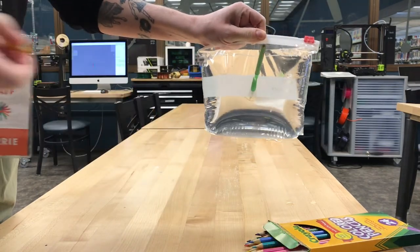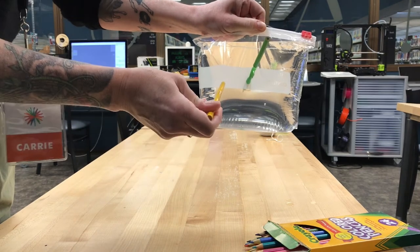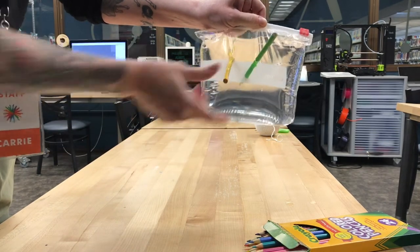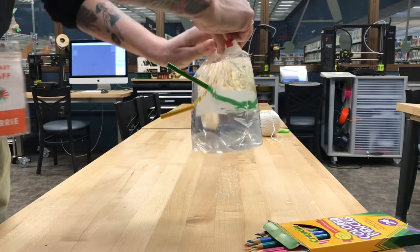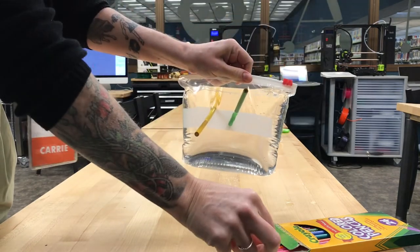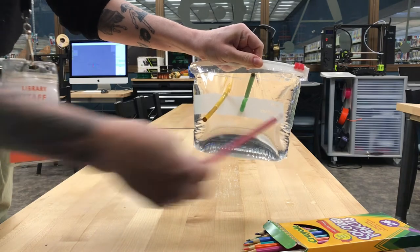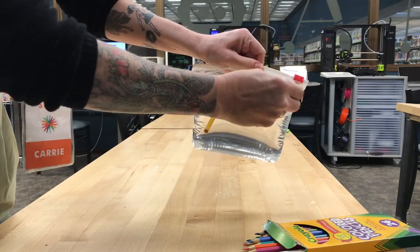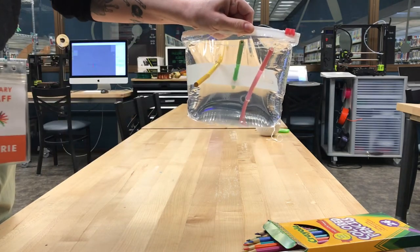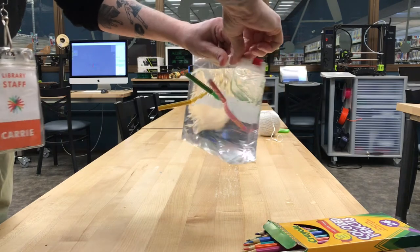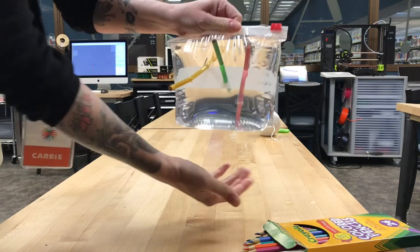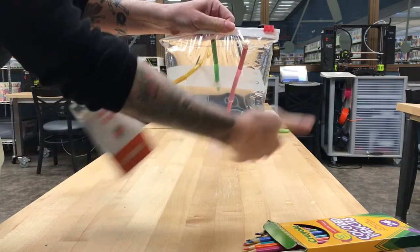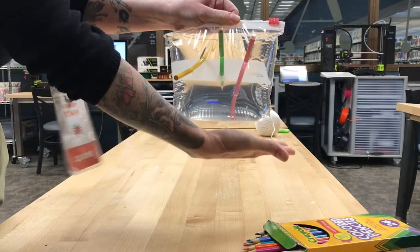Part of the reason this works is because the plastic of the bag is pretty flexible and forms around the pencil, but there is still a little bit of a gap between the pencil and the plastic. It just so happens that it is small enough of a hole that cohesion can overcome it. And as you can see, even with six holes in there, my hand underneath still remains fairly dry.